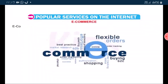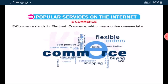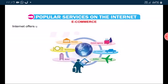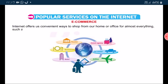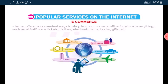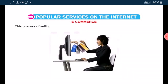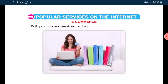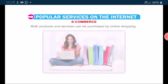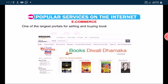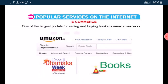E-commerce stands for electronic commerce, which means online commercial activities. Internet offers us convenient ways to shop from our home or office for almost everything such as air, rail, movie tickets, clothes, electronic items, books, gifts, etc. We can buy or sell new or second-hand goods also. This process of selling and buying products over the internet is called online shopping. Both products and services can be purchased by online shopping. One of the largest portals for selling and buying books is www.amazon.com.